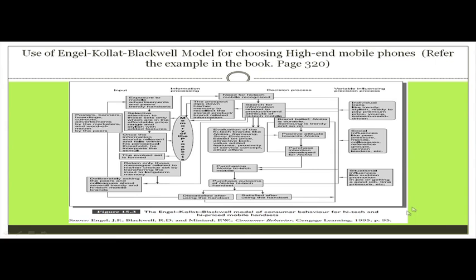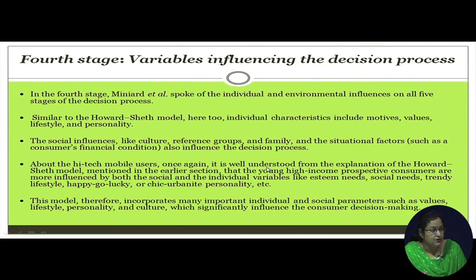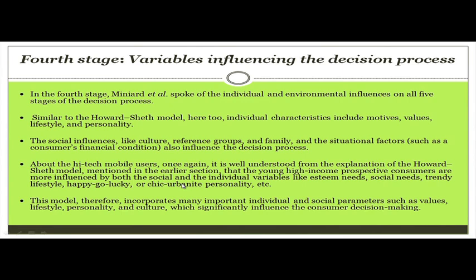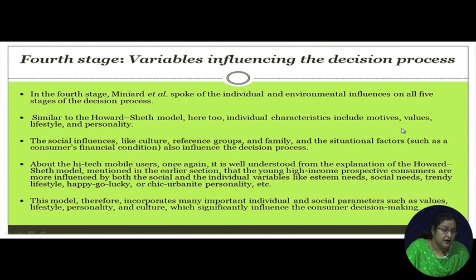The fourth part of this model covers the variables influencing the decision making process. As Manyard improved this model, he added individual and environmental influences, showing their implication on all stages of decision making. Similar to the watershed model, individual characteristics include motives, values, lifestyle, and personality of the customer. We have studied several motivational theories — such as Maslow's motivational theory and hedonic consumption motives — which help identify predominant motives behind need recognition.